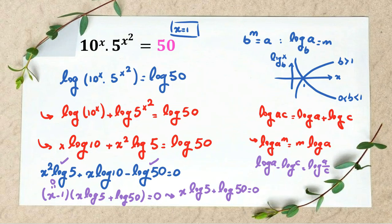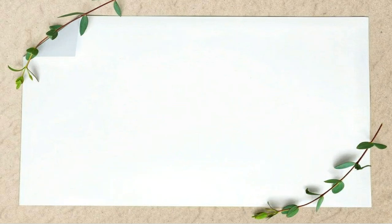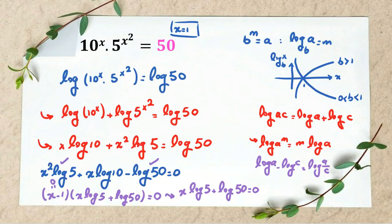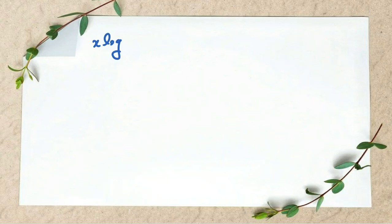Now we can say x log 5 plus log 50 equals 0. So x log 5, we take log 50 to the right-hand side, it will be negative log 50.